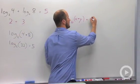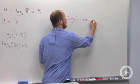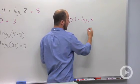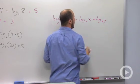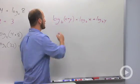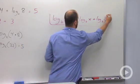This is going to be equal to log base B of x plus log base B of y. So this is the product rule of logarithms.